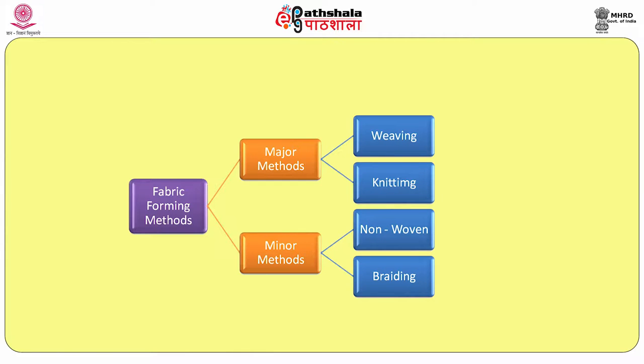Fibers, which are the micro material, are converted into fabric. There are two major classifications for the fabric manufacturing system. The major system contains weaving and knitting; the minor system contains non-woven and braided fabric. For these four manufacturing systems, we supply two varieties of raw material: fiber and yarn. From fiber, non-woven fabric can be manufactured; from yarn, woven fabric, knitted fabric, and braided fabric can be manufactured.